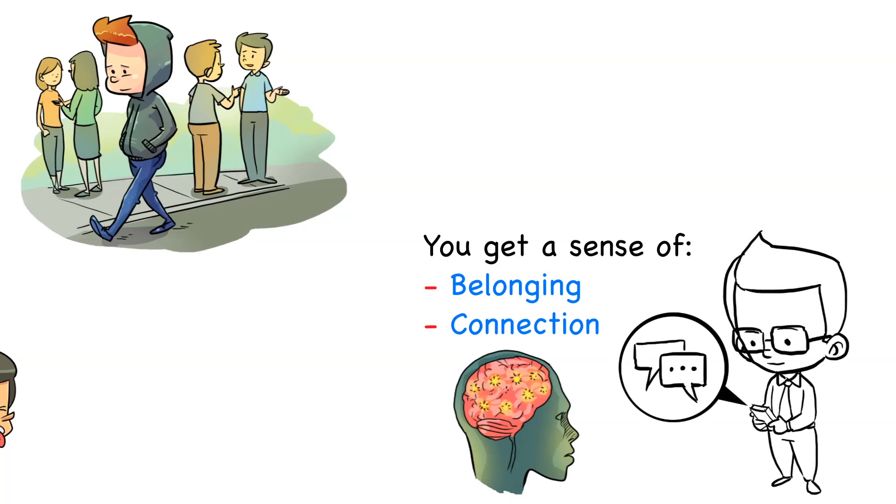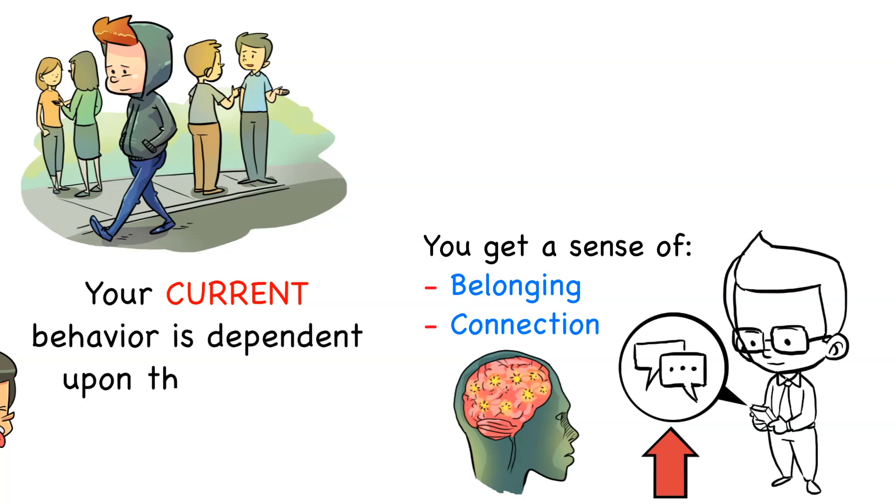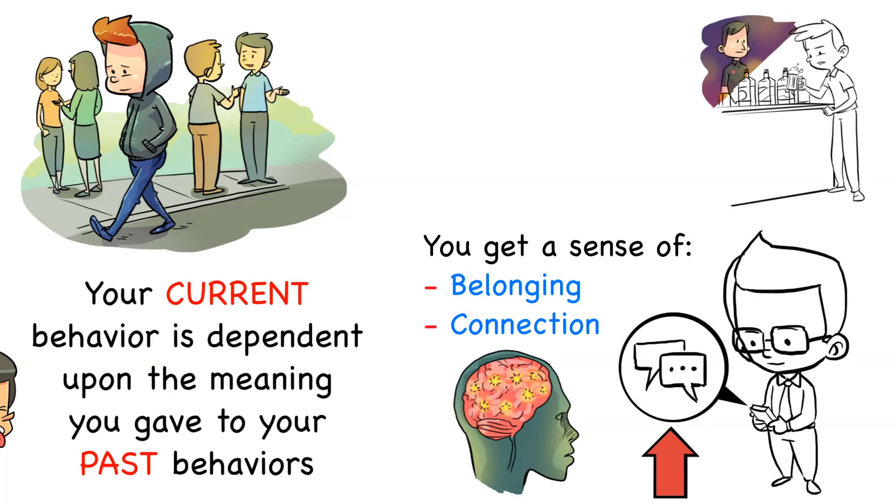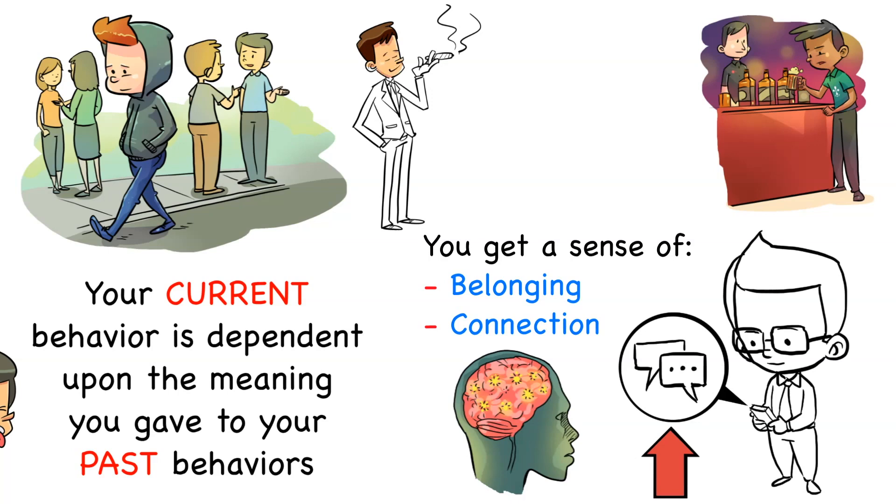The next time you feel lonely, your brain will not have to work hard for a solution because it has already found one in the past, and it's messaging your friends. This means that your current behavior is dependent upon the meaning you gave to your past behaviors. If drinking made you forget about your pain, then drinking equals good. If smoking reduced your anxiety, then smoking equals good.